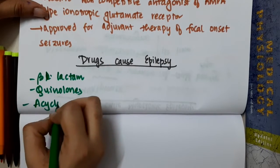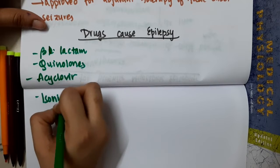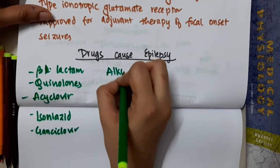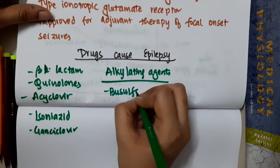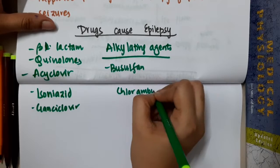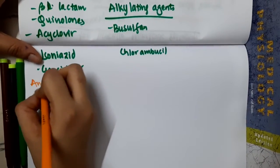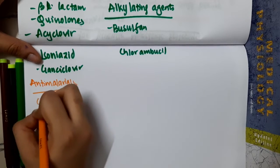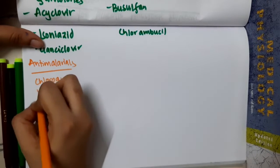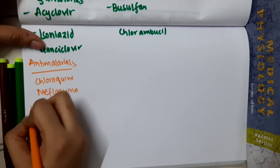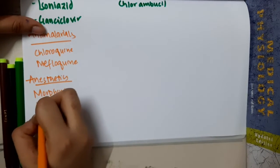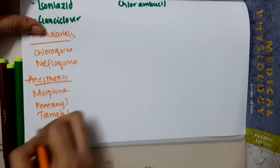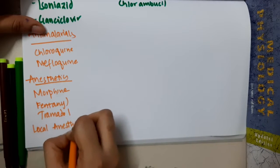Acyclovir, isoniazid, ganciclovir. Other drugs include alkylating agents such as busulfan and chlorambucil. Anti-malarials like chloroquine and mefloquine, and anesthetics like morphine, fentanyl, tramadol, and local anesthetics.